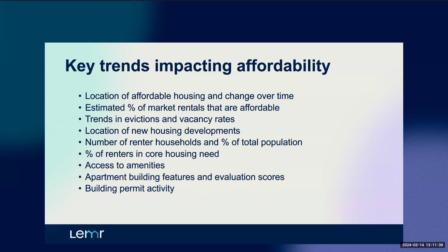The tool can provide a variety of insights. It covers trends impacting affordability and provides contextual information about regional differences and changes in stock across time. These include the location of affordable housing types and their change over time, estimated percentage of market rental units that are affordable, trends in evictions and vacancy rates, the location of new housing developments, the number of renter households and their percentage of the total population, the percentage of renters in core housing need, building and neighbourhood characteristics, access to amenities, apartment building features and evaluation scores, building permit activity, and rental options available in different neighbourhoods.